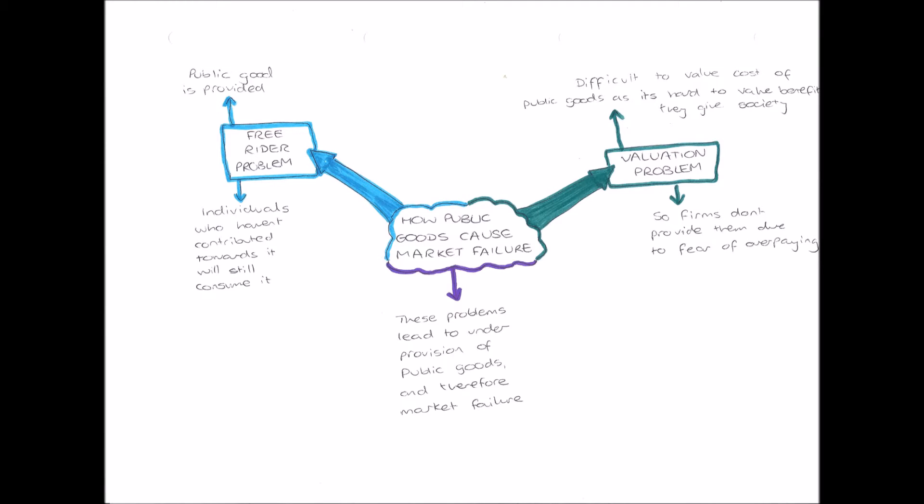Hello everybody and welcome to this microeconomic video on how public goods cause market failure. This video follows up the last one on public goods. The key point is that these problems lead to the under-provision of public goods and therefore market failure. Market failure occurs when there is a net welfare loss — when overall society loses out — and society loses out when public goods aren't provided for them.